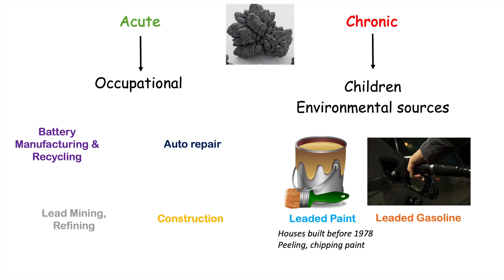If there are very small children in those environments and they ingest that chipped paint, this is a possible way they can be exposed. Another source comes from leaded gasoline, which was used starting in the 1920s and has also been phased out. The lead from gasoline was sent out through the exhaust into the environment and contaminated soil in many areas. Certain old toys painted with lead-based paint are another source of exposure as well.